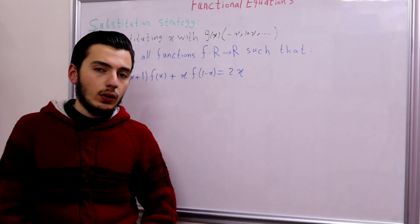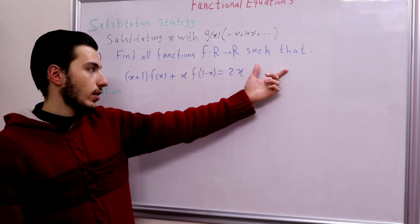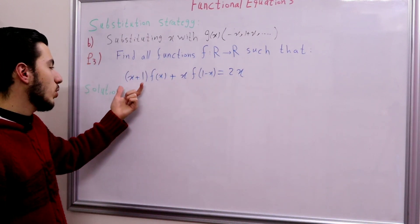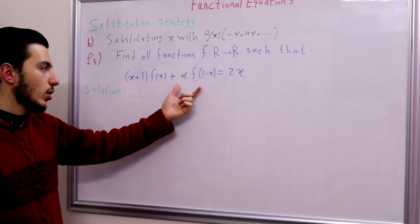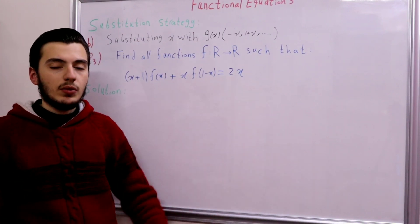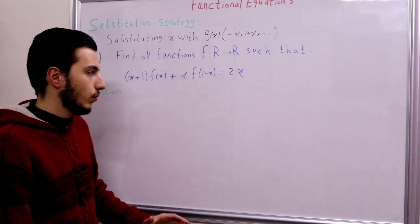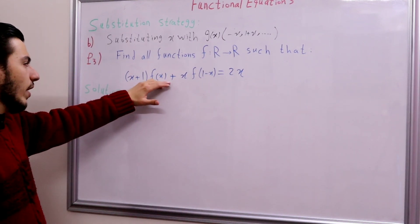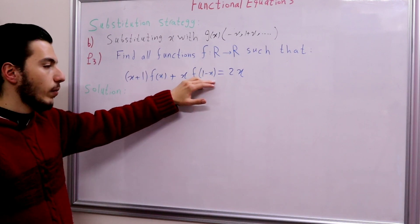So here we're asked to find all the functions f from ℝ to ℝ such that the following relation holds: (x + 1)·f(x) + x·f(1 − x) = 2x. If we look at the problem, we can see that f(x) is linked to f(1 − x).